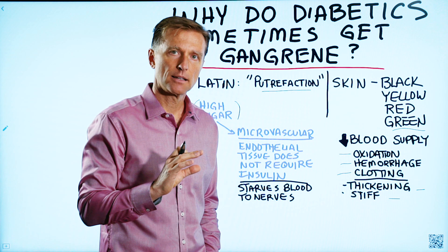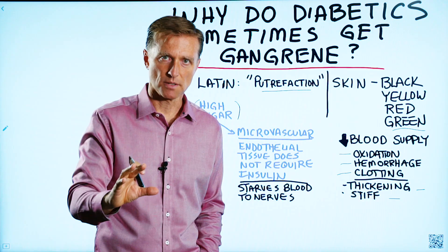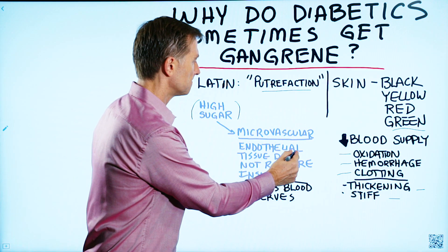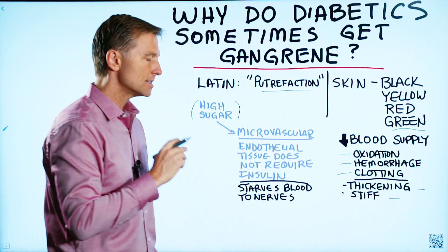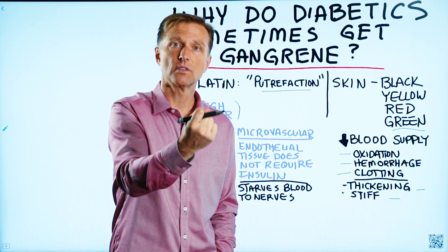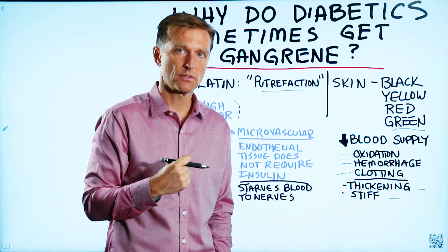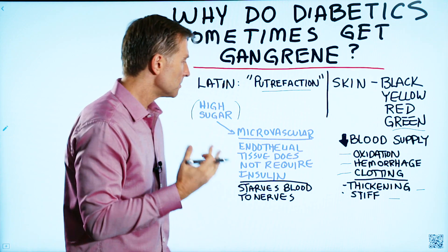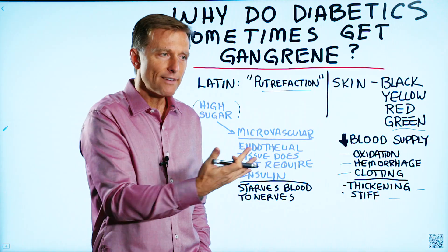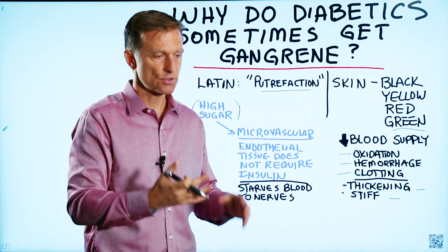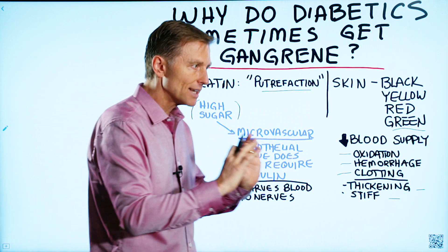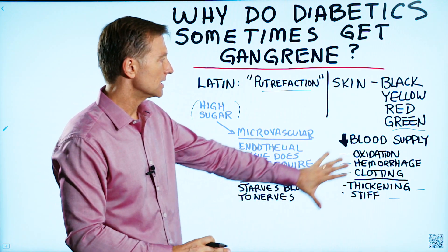All of this is going to stop the blood flow to the tissues and to the nerves. The lining on the inside of the vascular system is called the endothelial layer, and this layer does not require insulin to transport glucose into those cells. This means that if you have insulin resistance, you won't have any resistance there — if there's too much glucose, it's going to drive it right into the tissues, and that's really what's creating the damage.